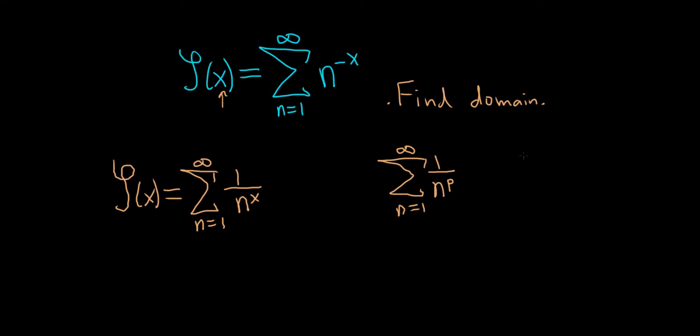The p series converges for p greater than 1. And that's what we want. We want the Riemann zeta function to converge. In other words, we want it to be equal to a number so the function is actually defined.